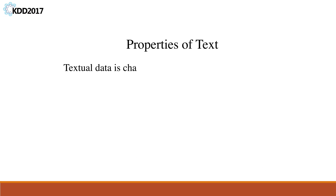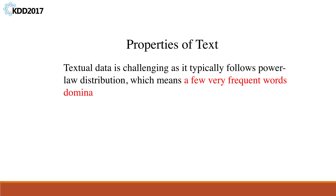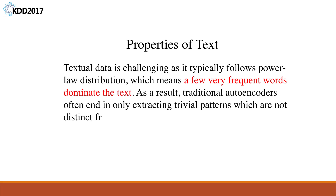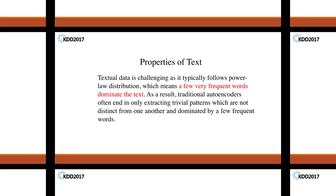Text data is challenging as it typically follows a power law distribution, which means a few very frequent words dominate the text. As a result, traditional autoencoders often end up only extracting trivial patterns which are not distinct from one another and are dominated by a few frequent words. This becomes the biggest obstruction of applying autoencoders on text.